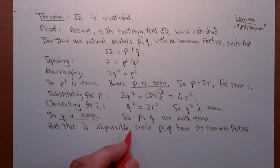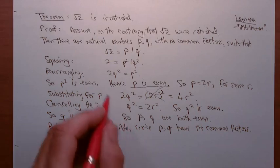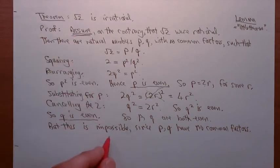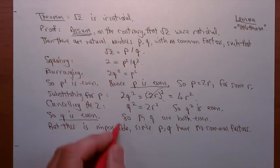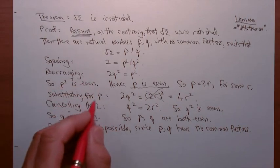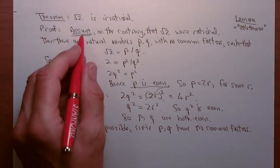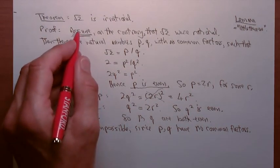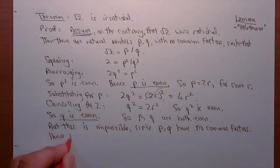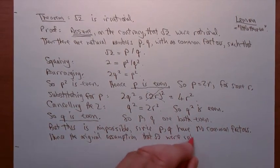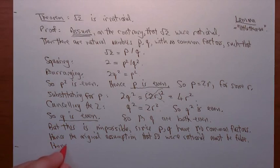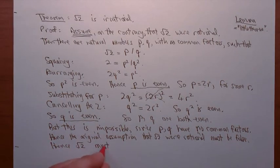How can we have arrived at an impossible conclusion by a piece of sound reasoning? The only thing that can possibly have gone wrong is we began by making a false assumption. The only way we could have reached a false conclusion by a valid argument is if we started with a false assumption. Hence, the original assumption that the square root of 2 were rational must be false. Hence, the square root of 2 must be irrational.